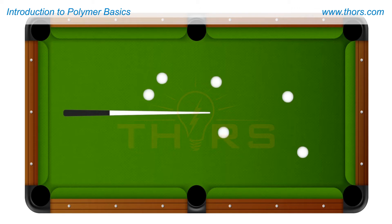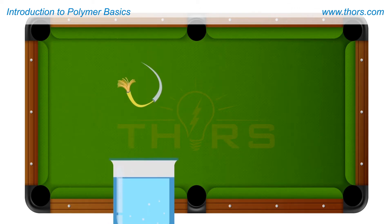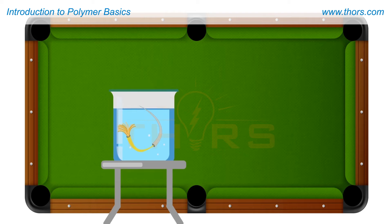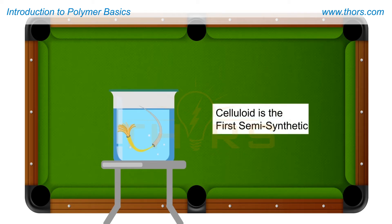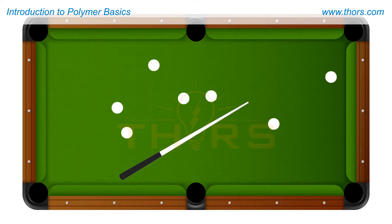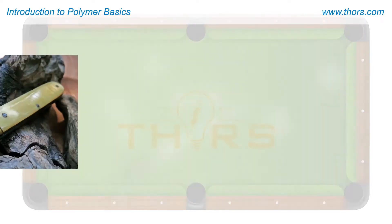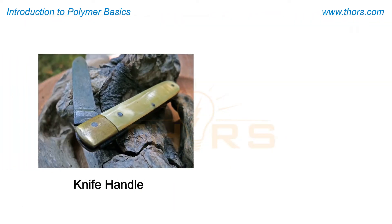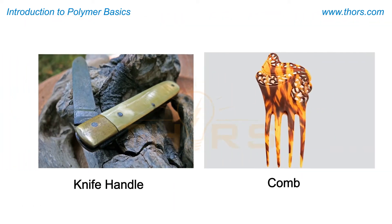In response to the advertisement, John Wesley Hyatt from New York created celluloid from modified cellulose. Celluloid is the first semi-synthetic material produced by man. The newly invented celluloid was flammable and was a poor substitute for ivory for the billiard balls. Nevertheless, celluloid became a household name and was used for knife handles, combs, and other items.